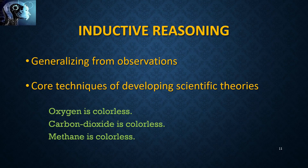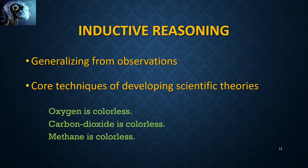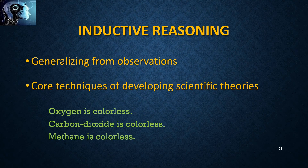In inductive reasoning there are observations, and then we try to generalize the conclusion. For example: oxygen is colorless, carbon dioxide is colorless, methane is colorless — those are the premises we have. Then we can conclude that all gases are colorless. However, it is not true, as there are some gases which have a color. Therefore, this reasoning technique does not guarantee the truth value of the conclusion, even though it has true premises. We must get the conclusion in a probability measure.